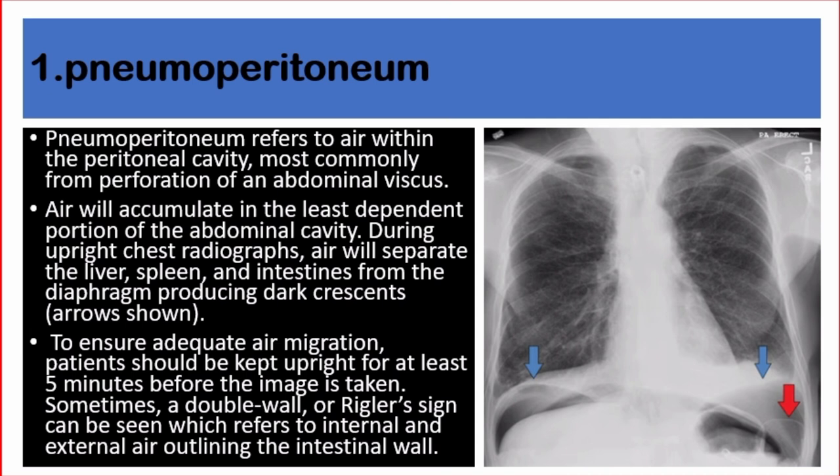To ensure adequate air migration, patients should be kept upright for at least five minutes before the image is taken. Sometimes a double wall or Rigler sign can be seen, which refers to intestinal and external air both outlining the intestinal wall.